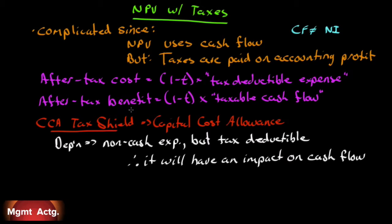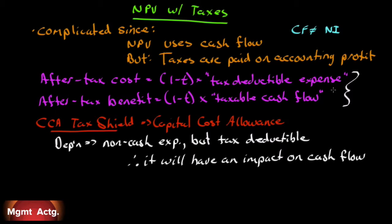On the other hand, our after-tax benefit is not as high as we think it is. If I earn $100 extra in my business and I pay 30% tax, I really only get to keep $70 — 30% goes to the government. So my after-tax benefit is one minus the tax rate times the taxable cash flow. Keep in mind the idea of a tax-deductible expense and a taxable cash flow.